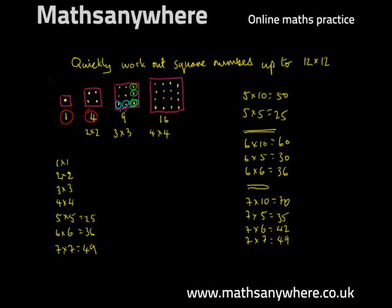So we've already worked out our first seven square numbers. So our first, second, third, fourth, fifth, sixth, seventh, we're over halfway.